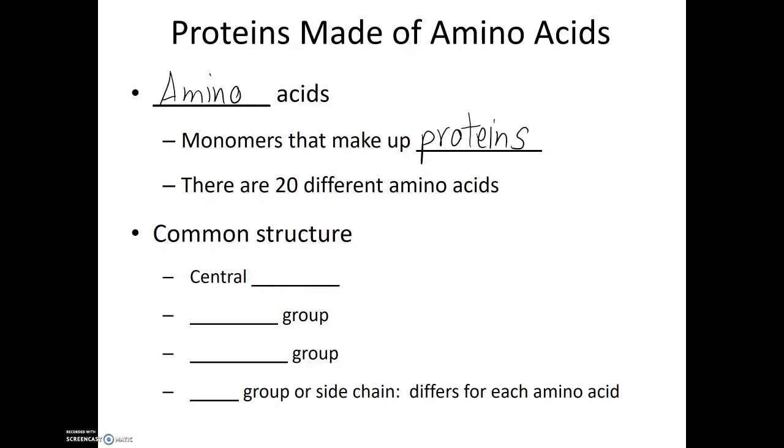There are 20 different amino acids. Now even though there are 20 different amino acids, there are some parts that are very similar amongst the amino acids. They all have a central carbon atom, an amino group, a carboxyl group, and then finally what makes them different from each other, the variable part of the amino acid, is known as the R group or side chain. And it's this part that makes the 20 different amino acids different from each other.